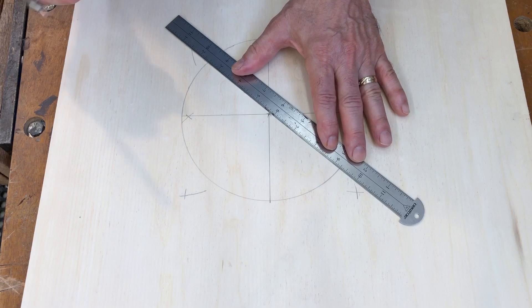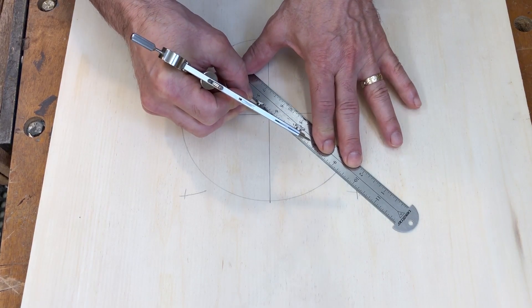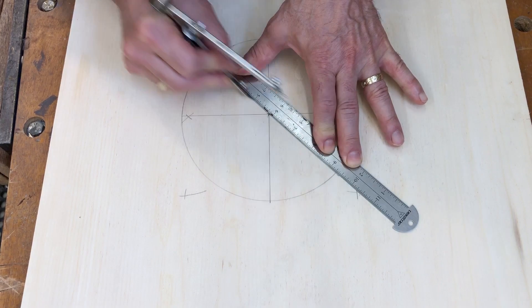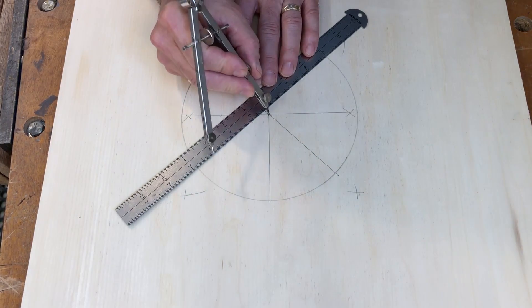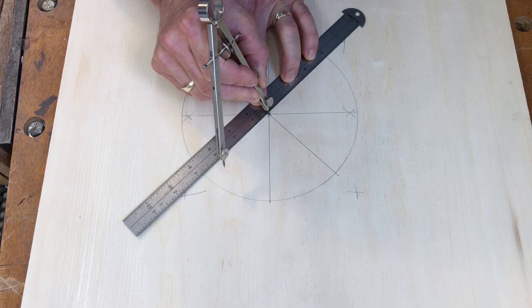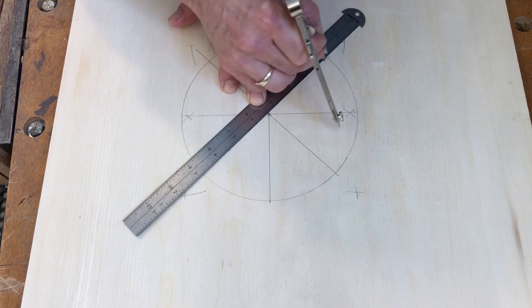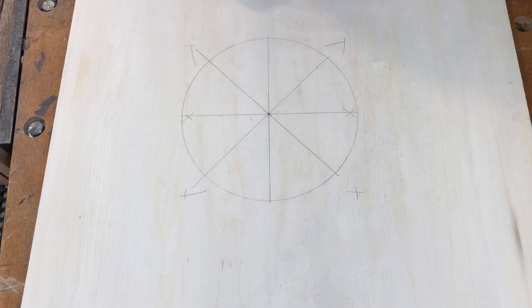Doing the same thing with the ruler, aligning it with the center point and then those opposite intersections. I can draw a line through there, and the line through those two intersections, and there's a circle divided into eight equal parts.